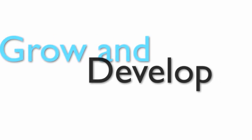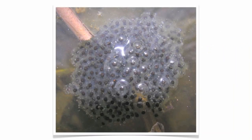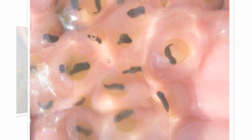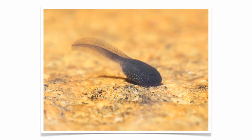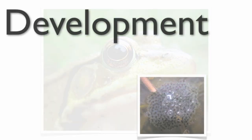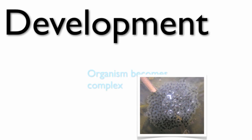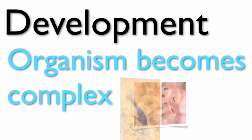The next characteristic of all living things is that all organisms grow and develop. A great example is a frog. A frog starts life as an egg, develops into a tadpole, and then turns into an adult. This change in the life of a frog is known as development, or when an organism becomes more complex.